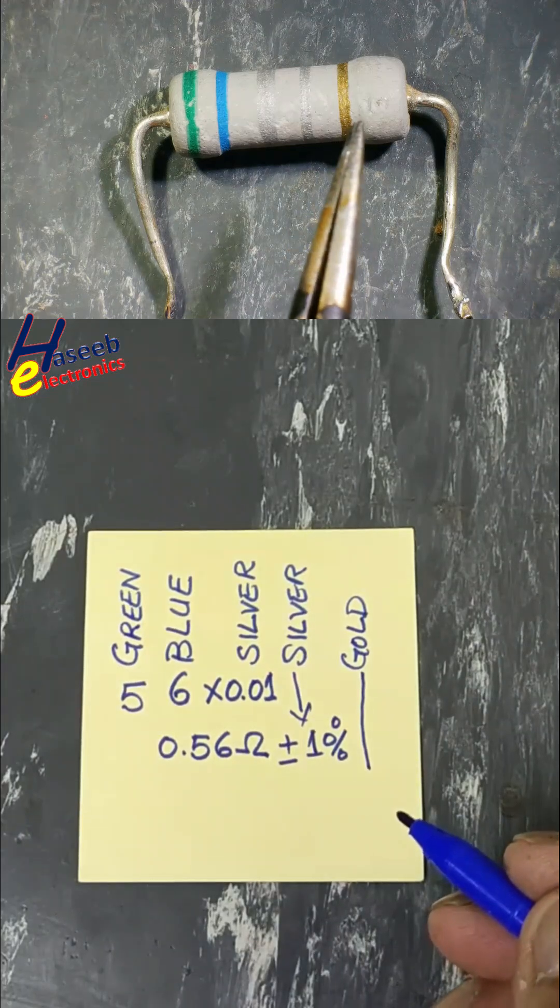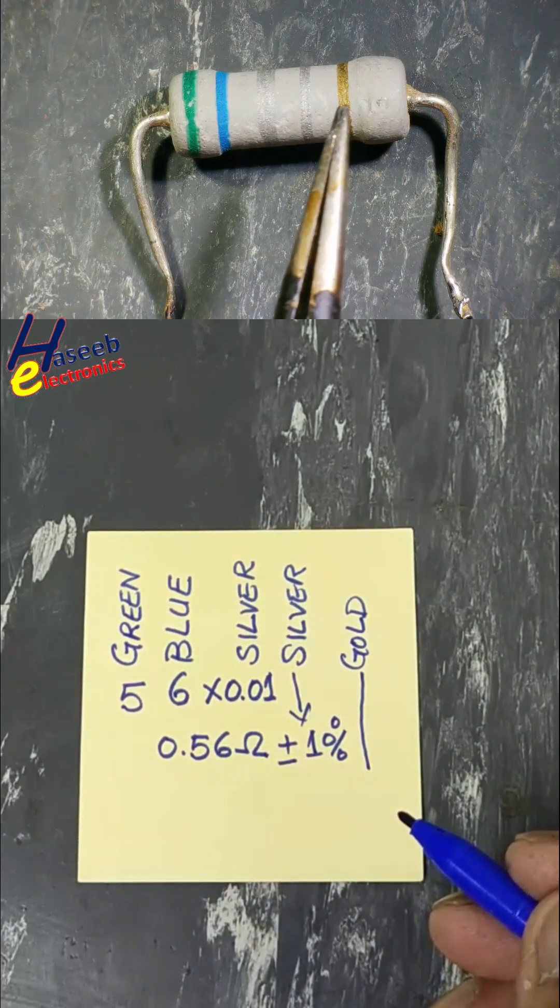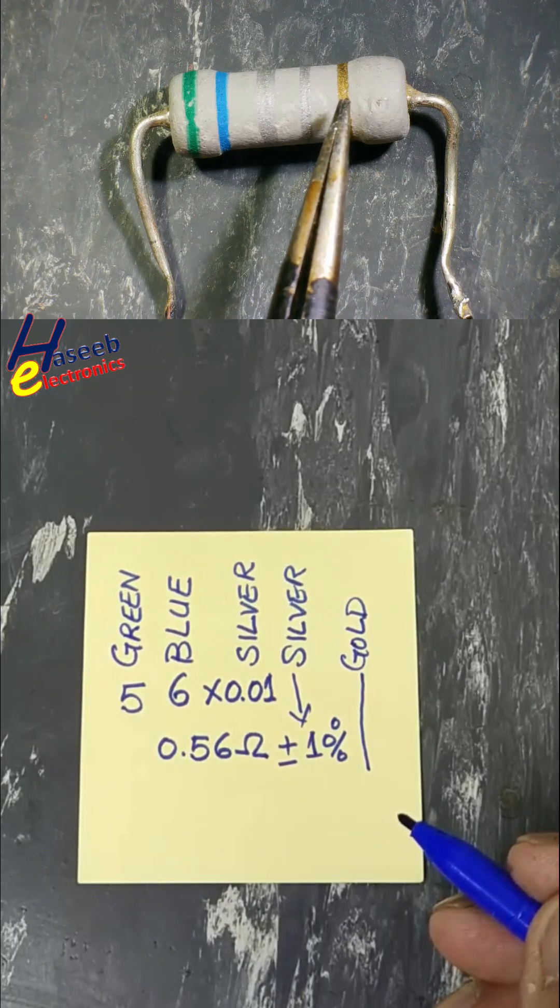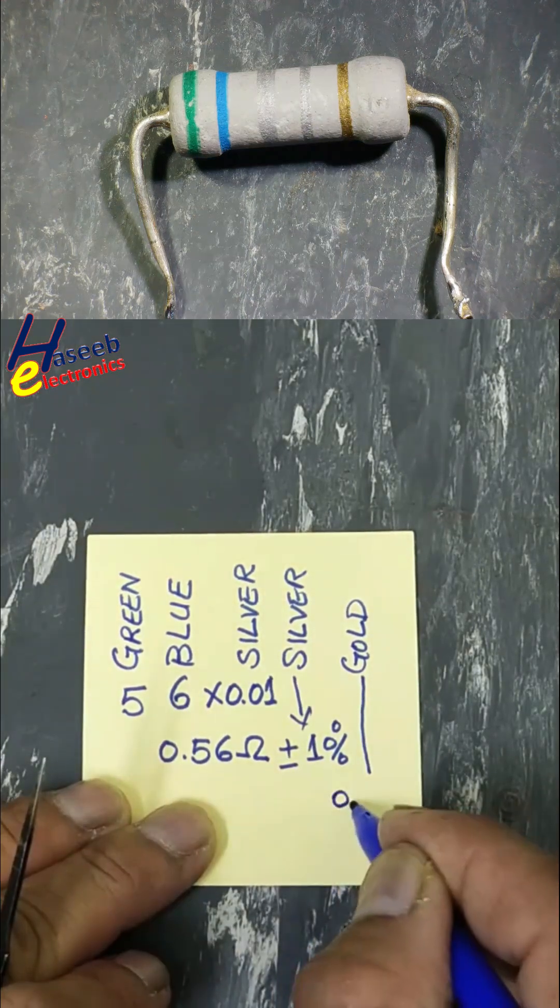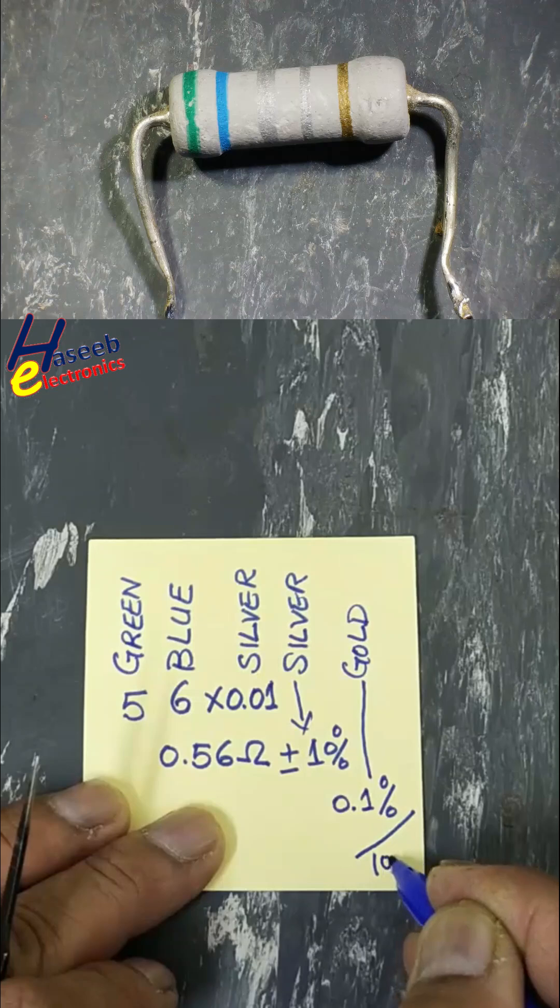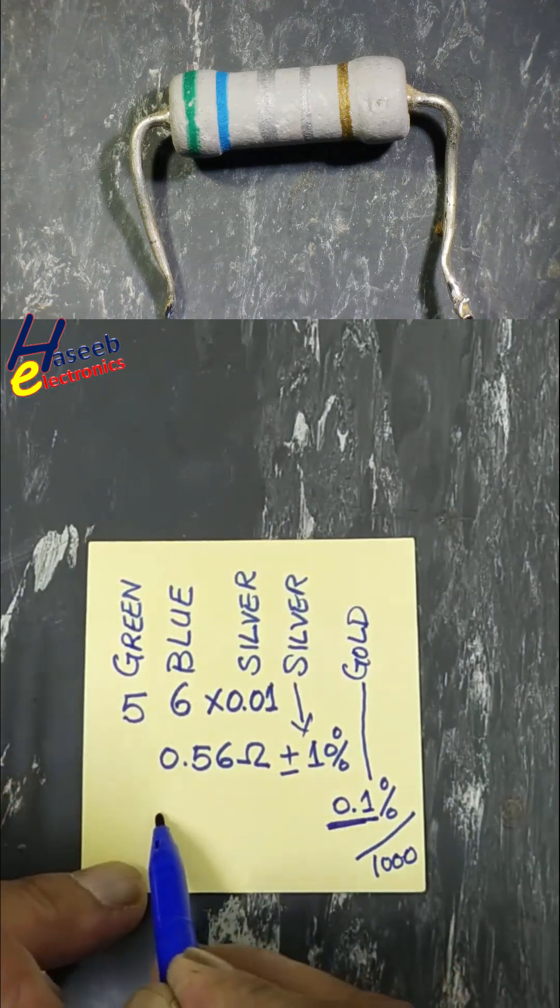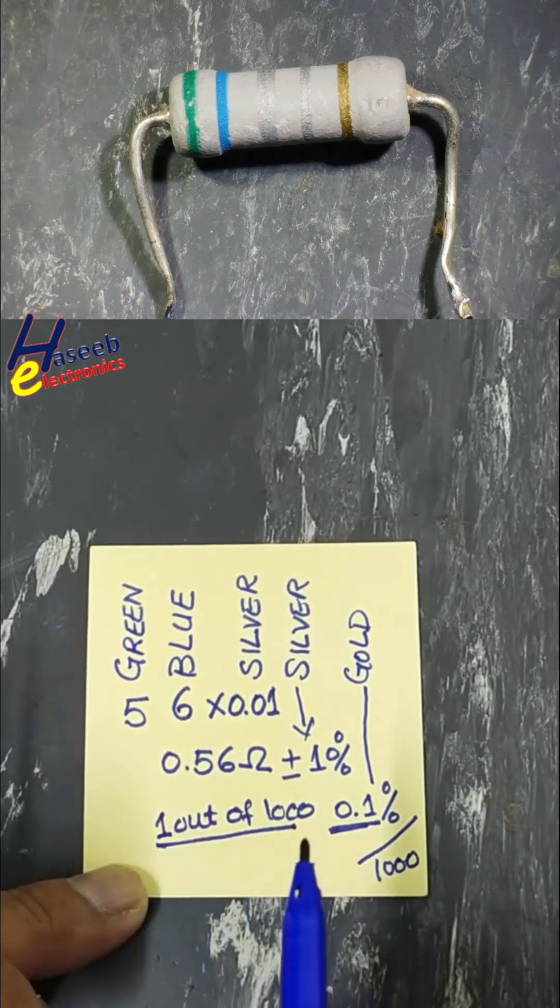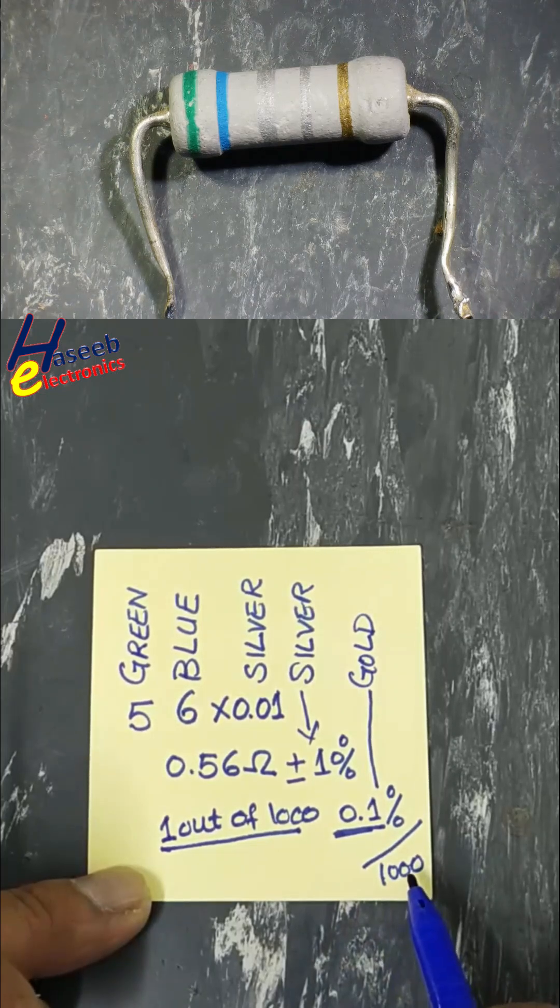If the fifth band is gold, silver, or some other band, that is the failure rate. For gold, 0.1% after 1000 working hours. 0.1% means one resistor out of 1000 resistors may fail after 1000 working hours.